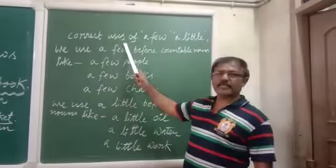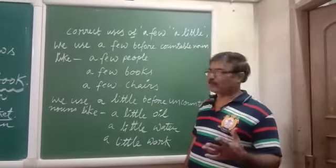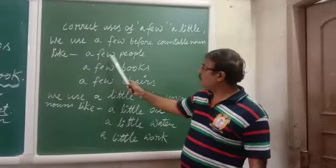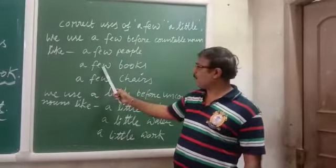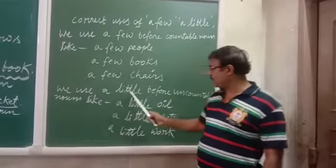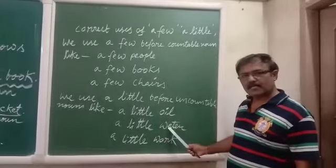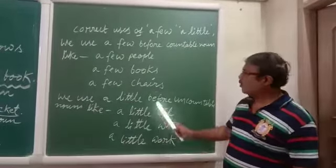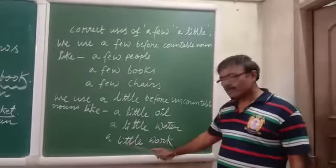Now, the correct uses of 'a few' and 'a little' — both are adjectives and we have to use them very carefully. We use 'a few' before countable nouns. For example: 'a few people' — people is countable, so we write 'a few.' Similarly, 'a few books,' 'a few chairs' — all countable nouns take 'a few.' Next, we use 'a little' before uncountable nouns, like oil — uncountable, so 'a little oil.' Water is uncountable, so 'a little water.'